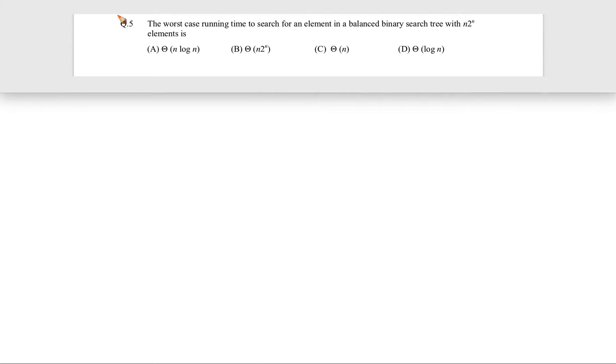Okay, now let's see this question. This question came in GATE 2012 for one mark. The question is: the worst case running time to search for an element in a balanced binary search tree with n × 2^n elements is what? So the number of elements is not simply n, it is something like n times 2 raised to the power n.